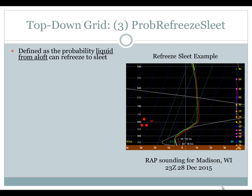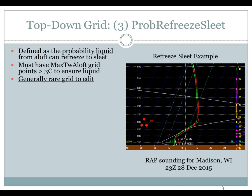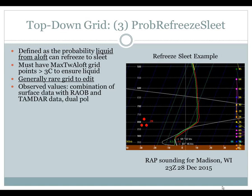The last top-down grid, outside of road temperature, is Prob Refreeze Sleet. This is defined as the probability that liquid from aloft — after melting — can refreeze to sleet. That means your max wet bulb aloft grid must have values greater than 3°C to ensure liquid. An example sounding from Madison on December 28th, 2015 shows the warm nose around 800 millibars, pretty much saturated and sitting around 5°C — a good refreeze example. This is generally a rare grid to edit; mostly northern plains offices through the Great Lakes will encounter this.